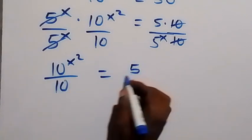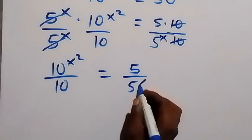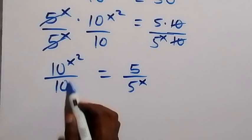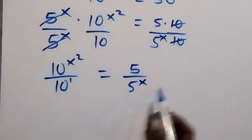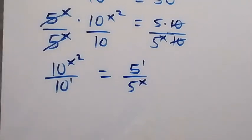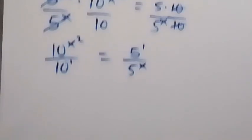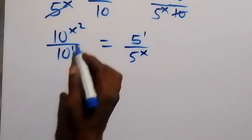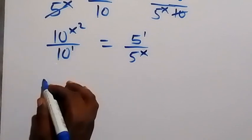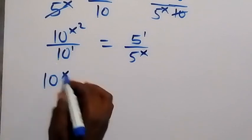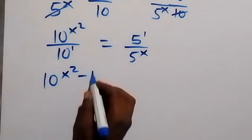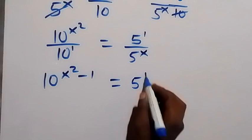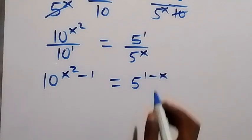From here we have 10 raised to power 1, which is the same as 10, and 5 raised to power 1, which is the same as 5. When we apply the law of indices — when we have division we subtract the powers — that gives us 10 raised to power x squared minus 1, equals 5 raised to power 1 minus x.